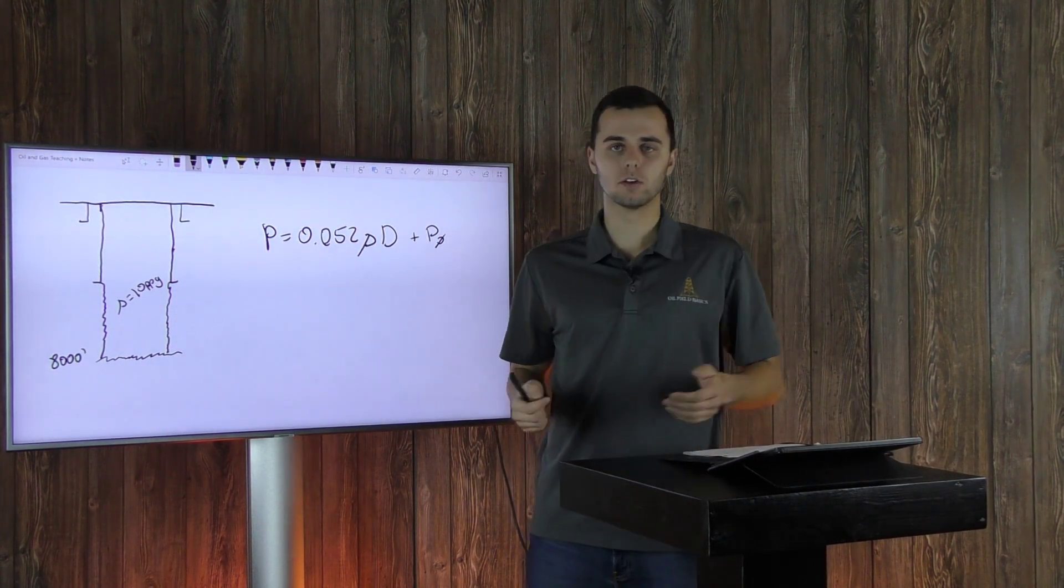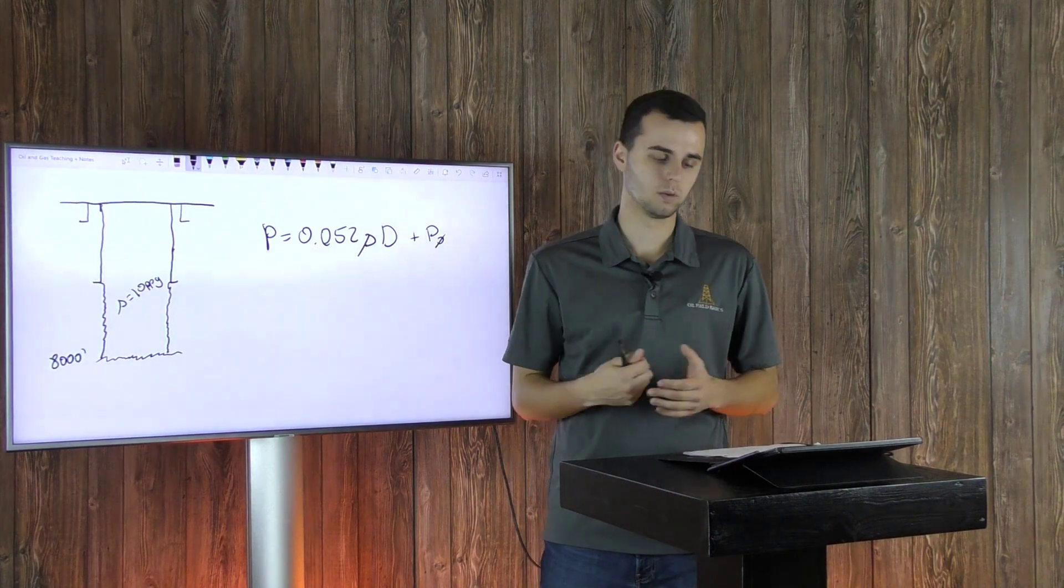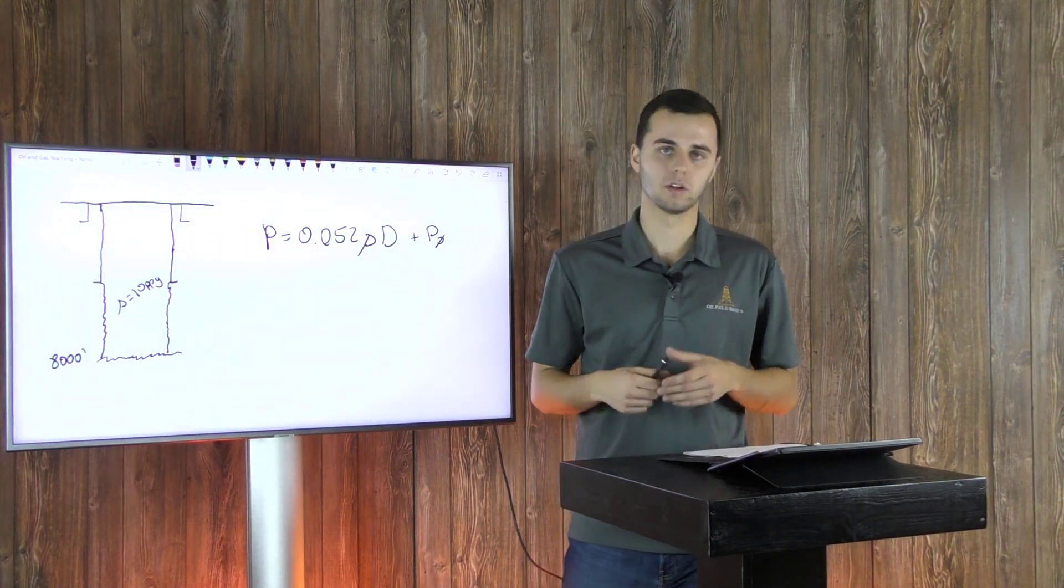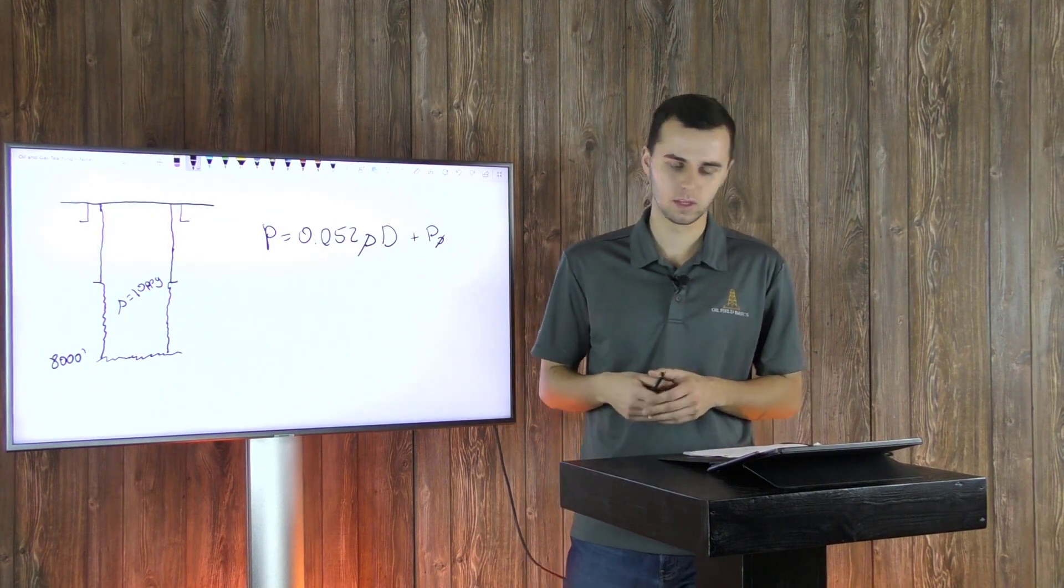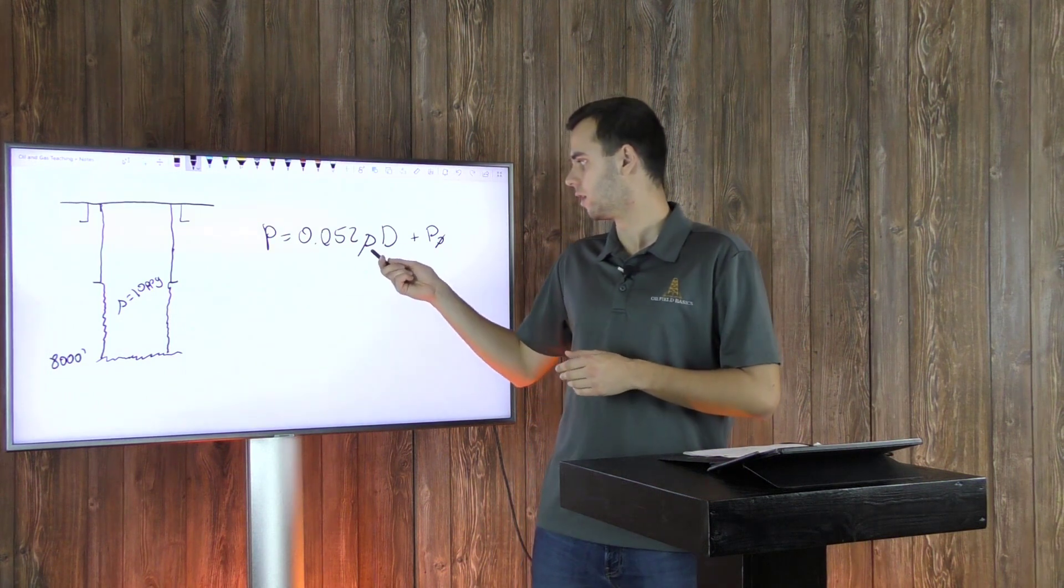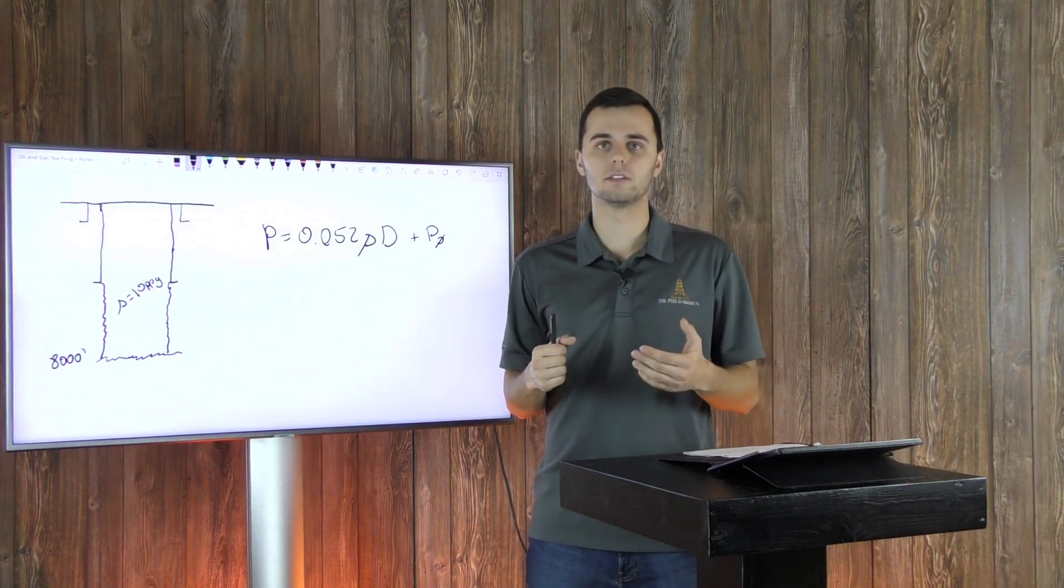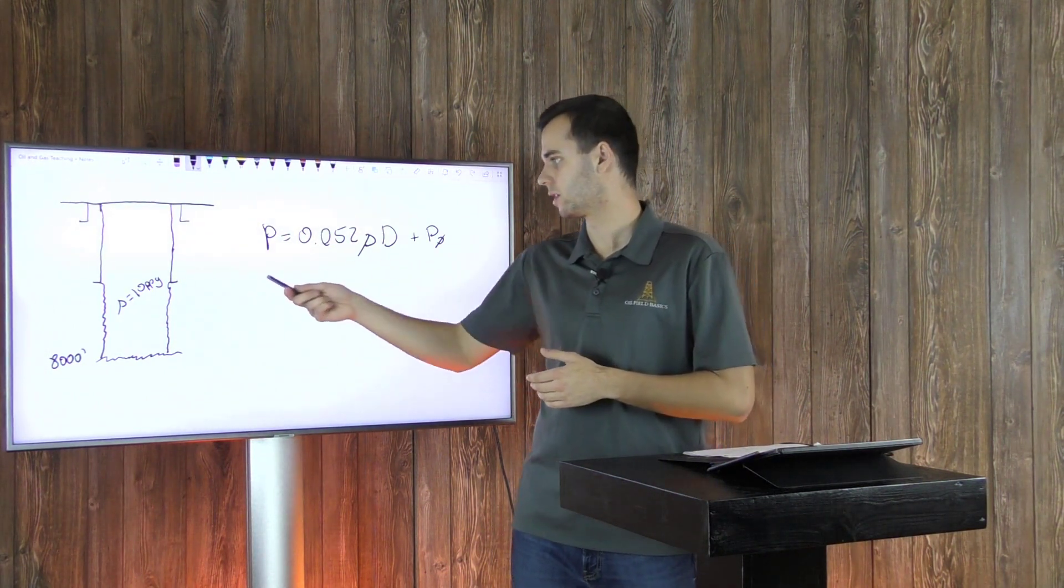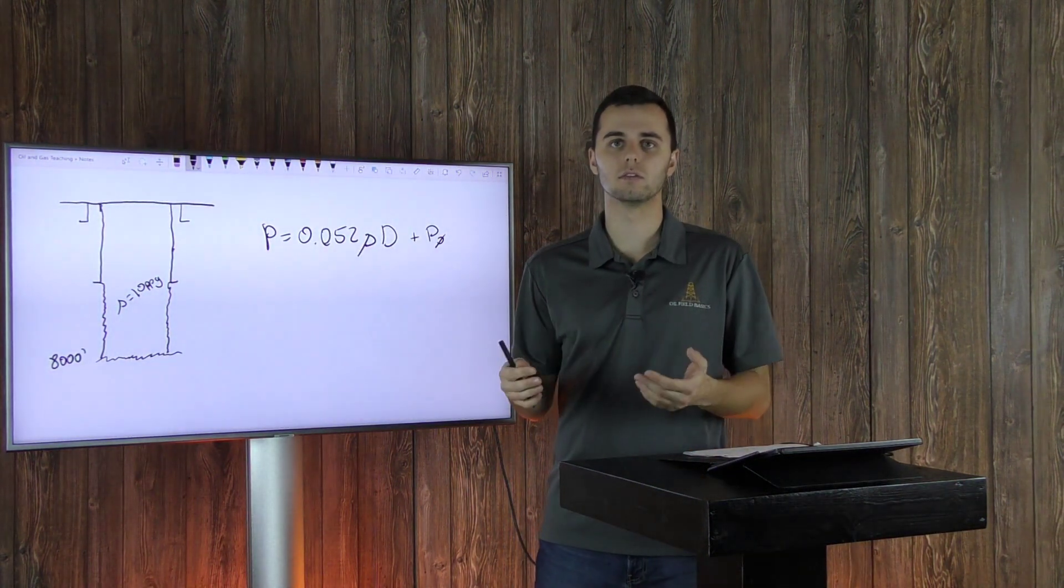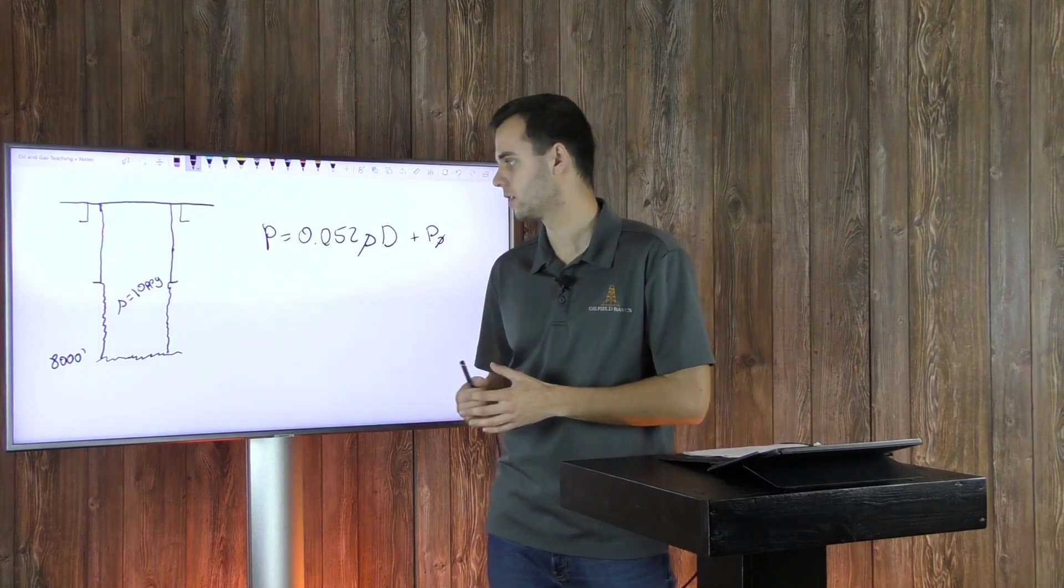And so let's go through this equation. This is your typical mud weight equation. Sometimes you won't even see this p-naught part of it, but I'm going to include it just to be more accurate. So 0.052 is your constant, rho is your density, so that would be your 10 pounds per gallon. Depth is the depth at which you're drilling to, or that you're trying to calculate your pressure, so at 8,000 feet today.